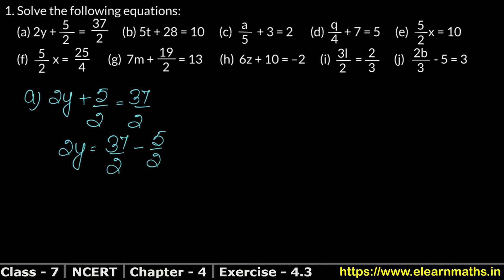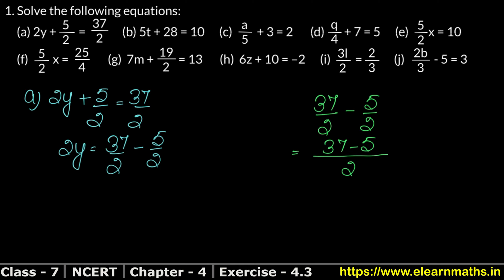Now we solve: 2y = 37/2 − 5/2. The denominator is the same (2), so the LCM is 2. We write 37 − 5 on top with a minus sign between them. 37 minus 5 gives us 32, so 2y = 32/2.